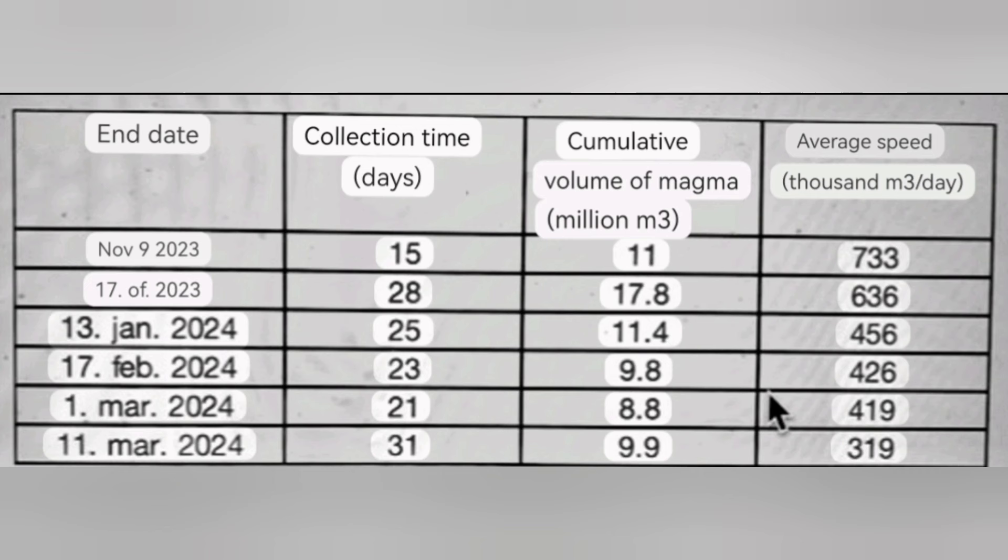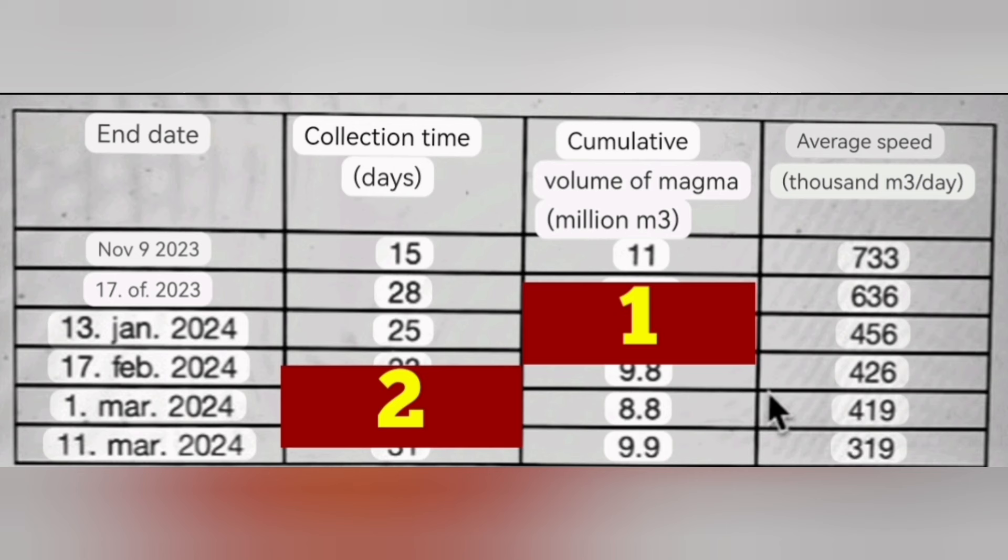I will show them as number one and two so you can see that. They have divided column number one by column number two and came to the conclusion for the average speed of thousand cubic meters per day, million cubic meters per day in the third column.